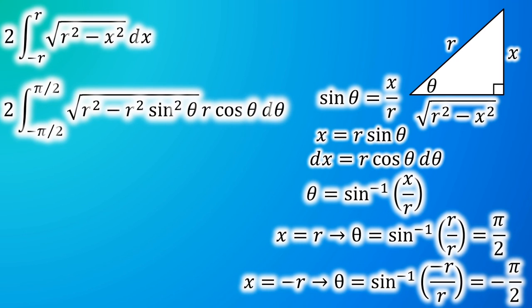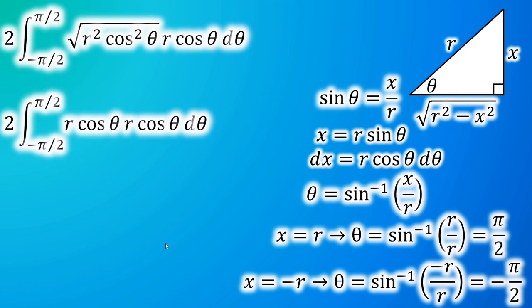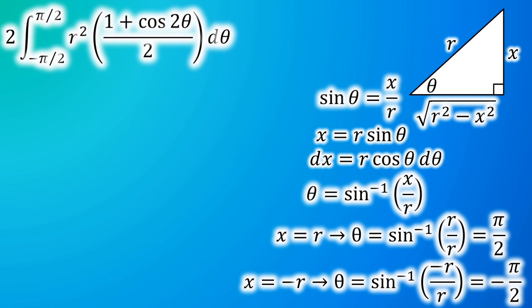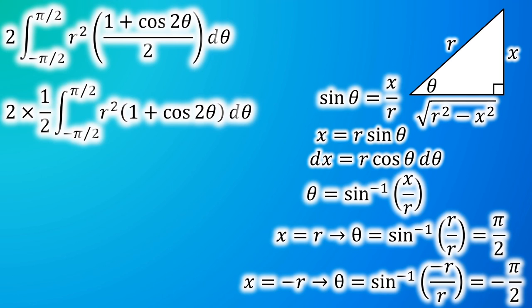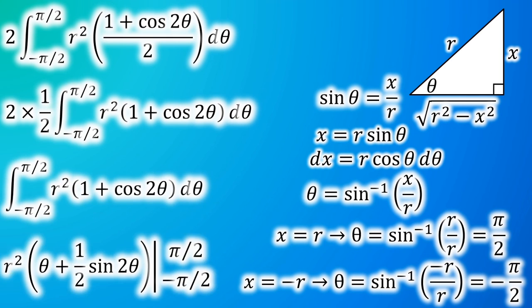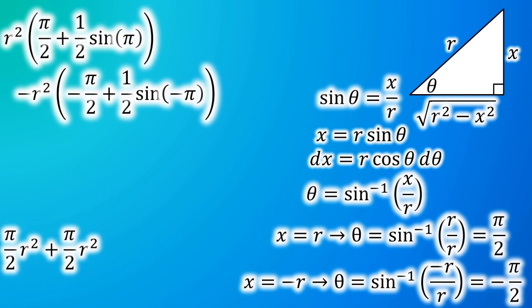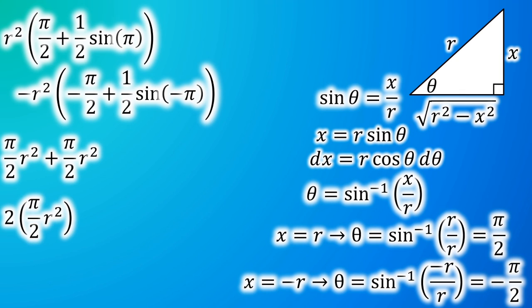We substitute all of this in, then factor and simplify. We simplify further and use a trigonometric identity. We take the ½ outside the integral and integrate. After substituting in and simplifying — noting that adding two equal terms doubles them — we simplify further and arrive at the area of the circle being π·r².